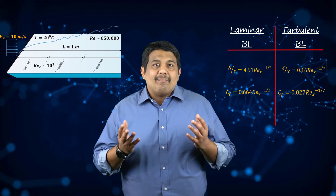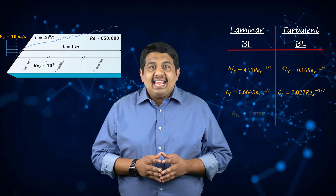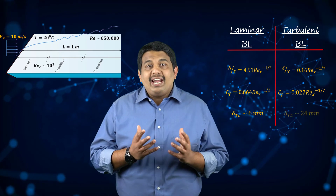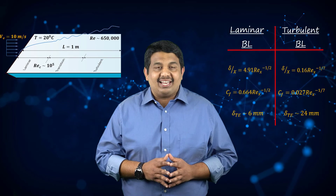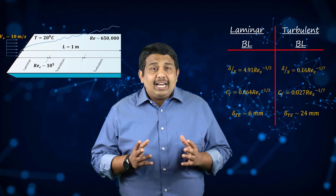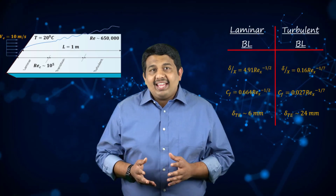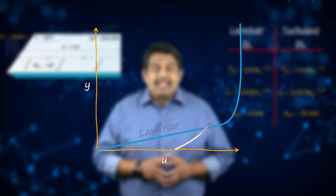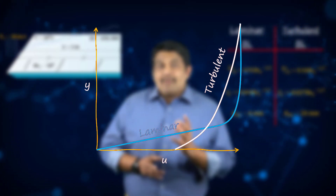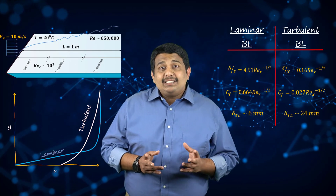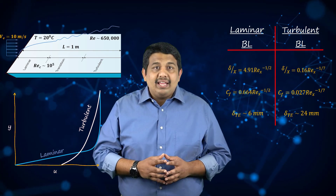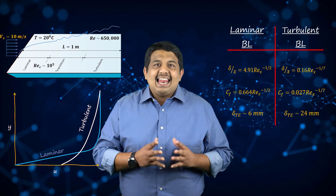At the trailing edge of the plate, the boundary layer thickness assuming a laminar profile is approximately 6 mm. On the other hand, the turbulent profile is about 24 mm, which is 4 times that of the laminar profile. The skin friction coefficient values also show a similar trend. A representative profile for the axial velocity distribution as it varies with the wall-normal distance for both boundary layer types is shown in this graph. It is easy to see that the turbulent profile is fuller compared to the laminar profile. This is because of the enhanced momentum exchange for turbulent boundary layers that brings high-velocity fluid from the outer regions towards the wall. With that, let us wrap up this lesson.